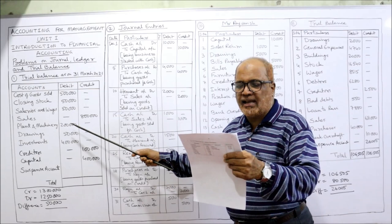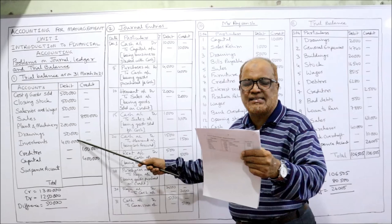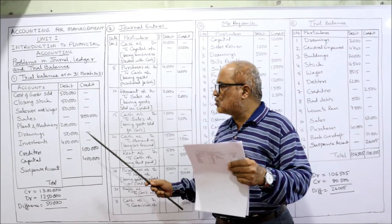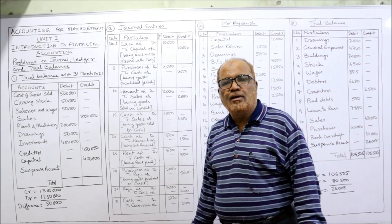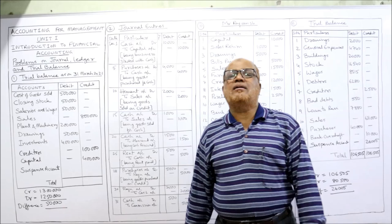Sales is an income — credit side 8 lakh rupees. Plant and machinery is an asset — debit column 2 lakh. Drawings — debit column 50,000. Investment is an asset — debit column 4 lakh. Credit card is a liability — credit balance 1 lakh. Capital — credit side 4 lakh. That's all.